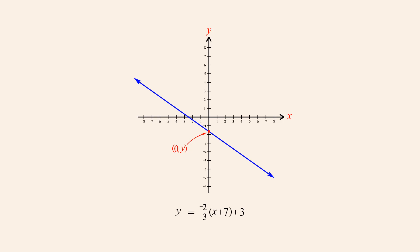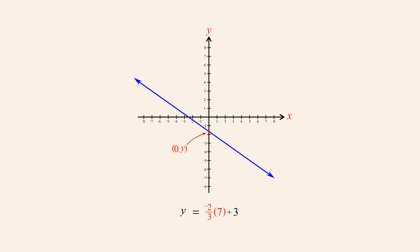Therefore, if we set the value of x in our equation to zero, we can solve the equation to find the corresponding value of y for that point. Completing the arithmetic, we add zero plus seven to get seven, and multiply negative two-thirds times seven, which gives us negative fourteen-thirds.